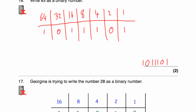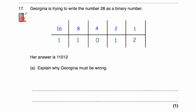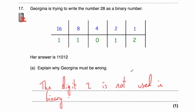Question 17 says: Georgina is trying to write the number 28 as a binary number. Her table has columns 16, 8, 4, 2, and 1, and she's got the answer 11012. Explain why Georgina must be wrong. The digit 2 is not used in binary — binary only uses the digits 0 and 1. That's the error.